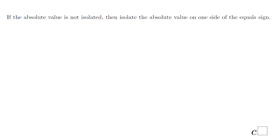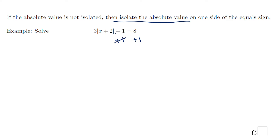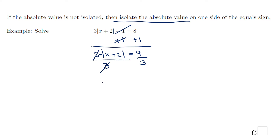In the second part of this lesson, I want to look at absolute value equations where the absolute value is not isolated — like in this case. You have 3 times absolute value of x plus 2, minus 1, equals 8. The first step is to isolate the absolute value expression, so I'm going to add 1 on both sides to get 3 times absolute value of x plus 2 equals 9. Then divide by 3, and we have absolute value of x plus 2 equals 3.